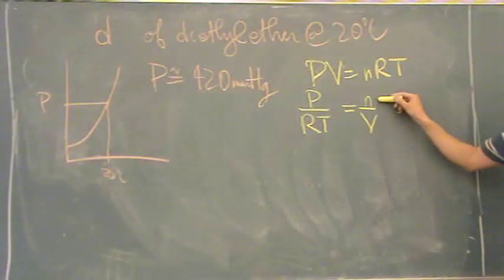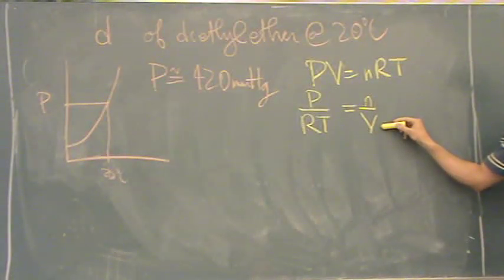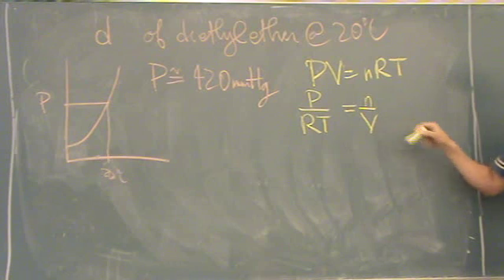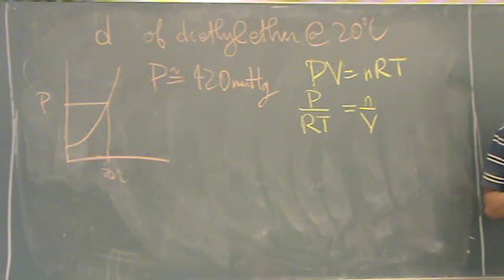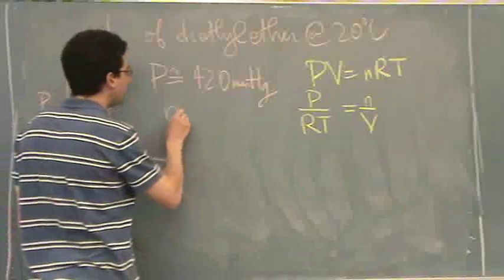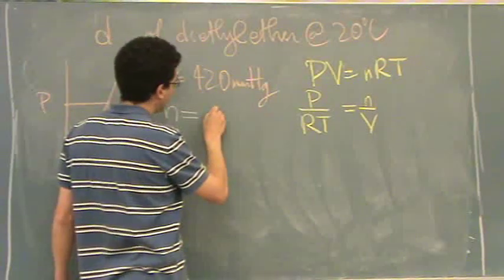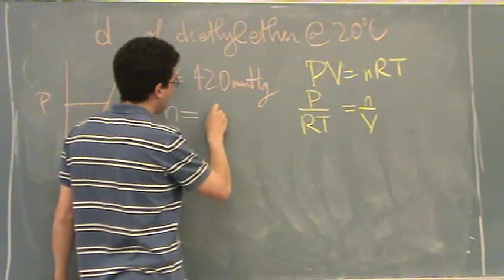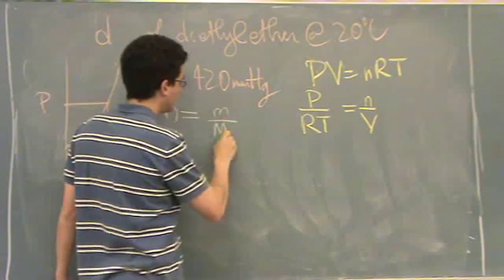This is right now moles per volume or liters. We don't really want moles. We'd actually prefer to have something like a mass up there. So, kind of on scratch here. Moles is, let's see, mass divided by molar mass. Is that right?